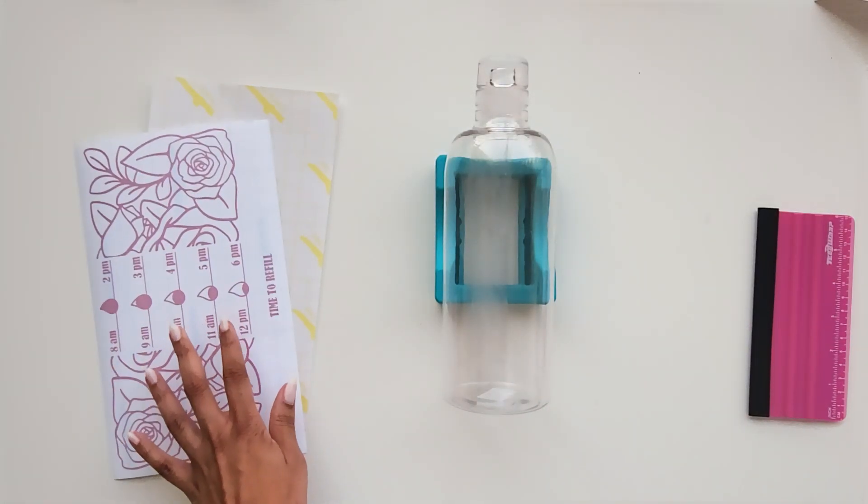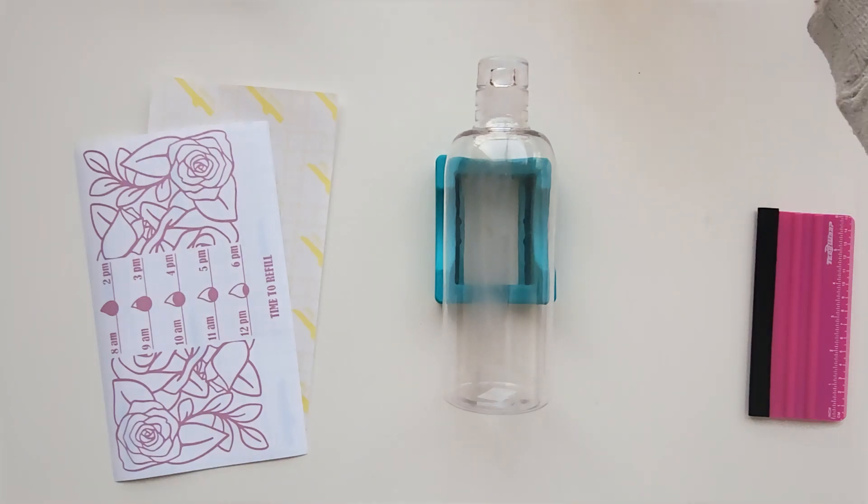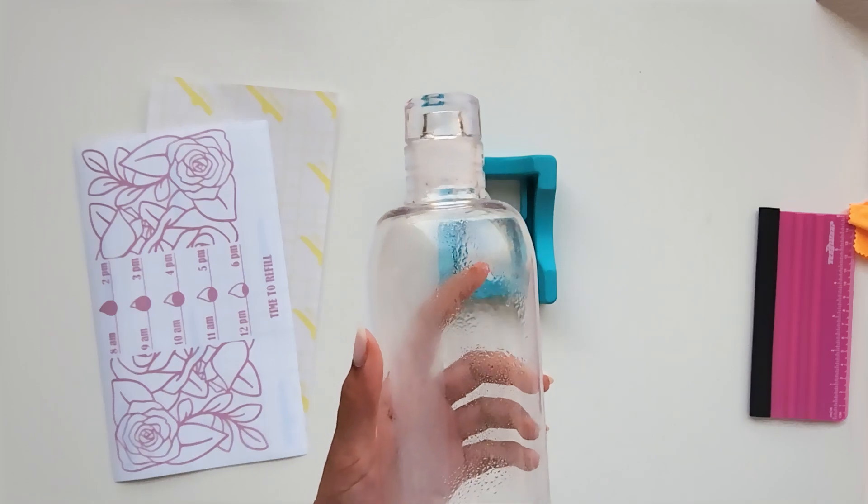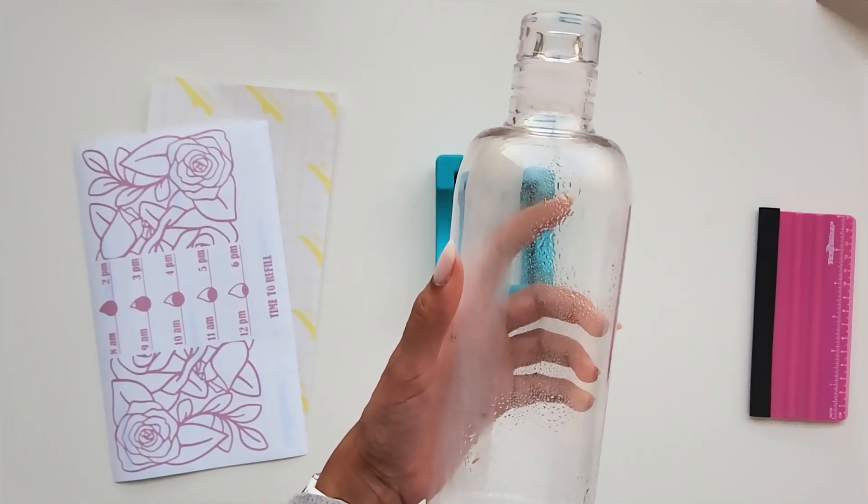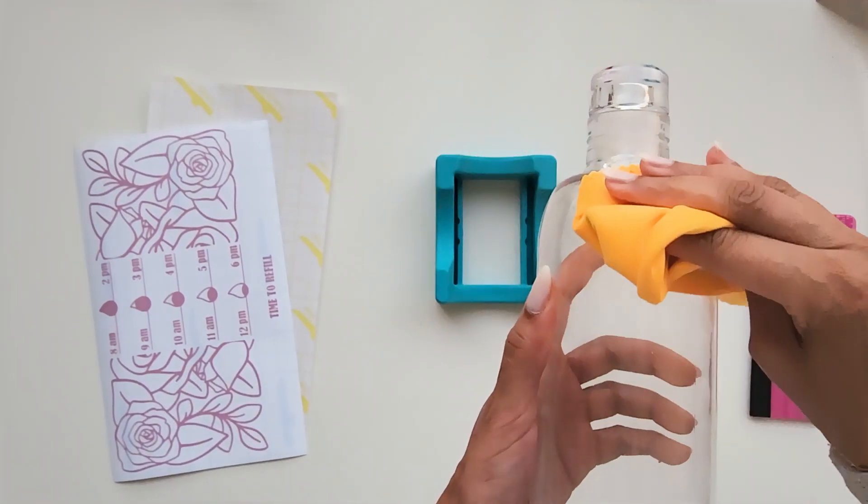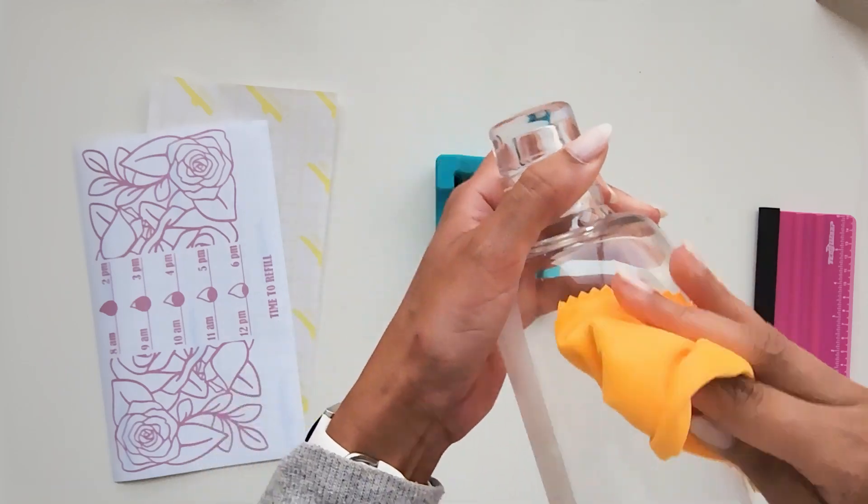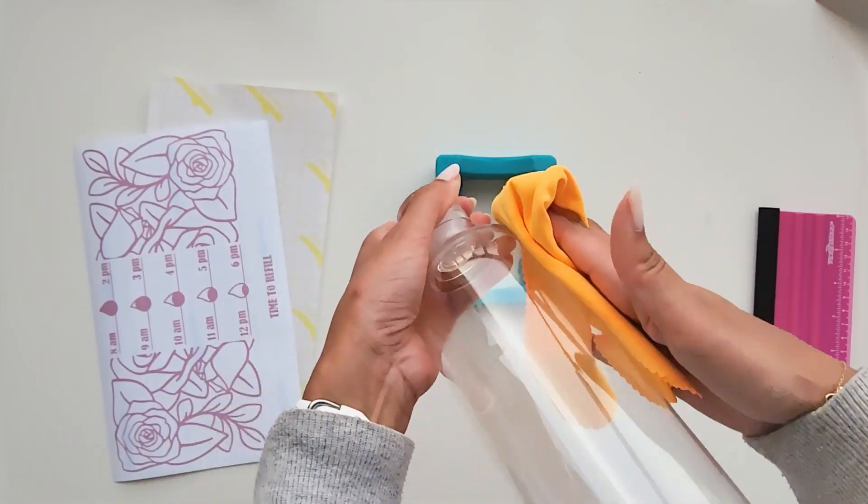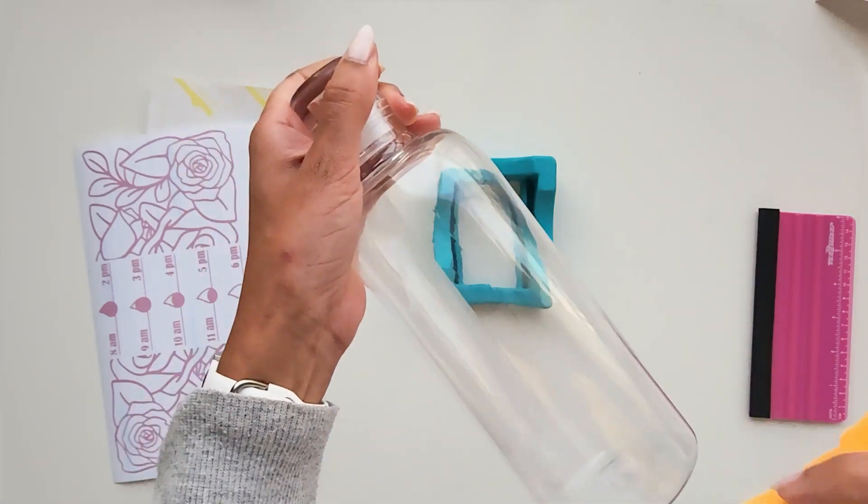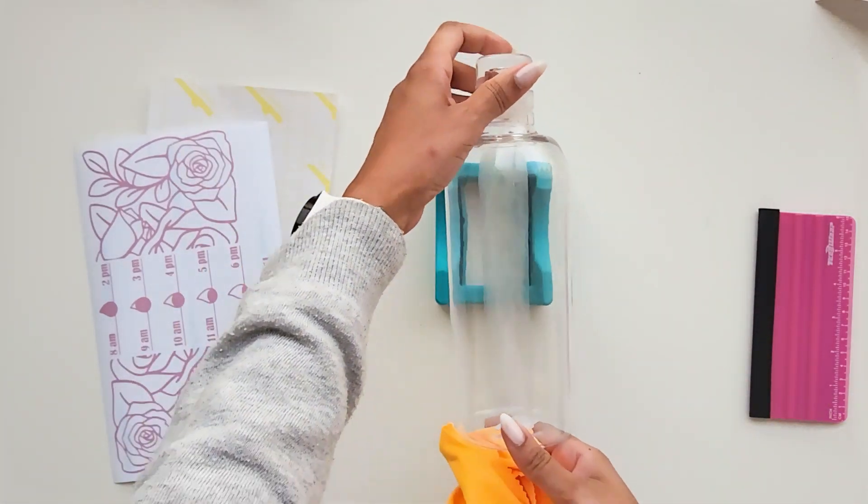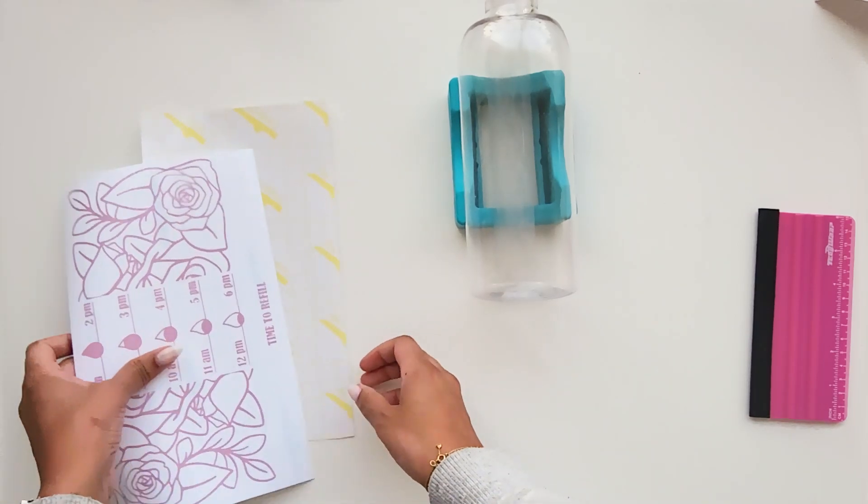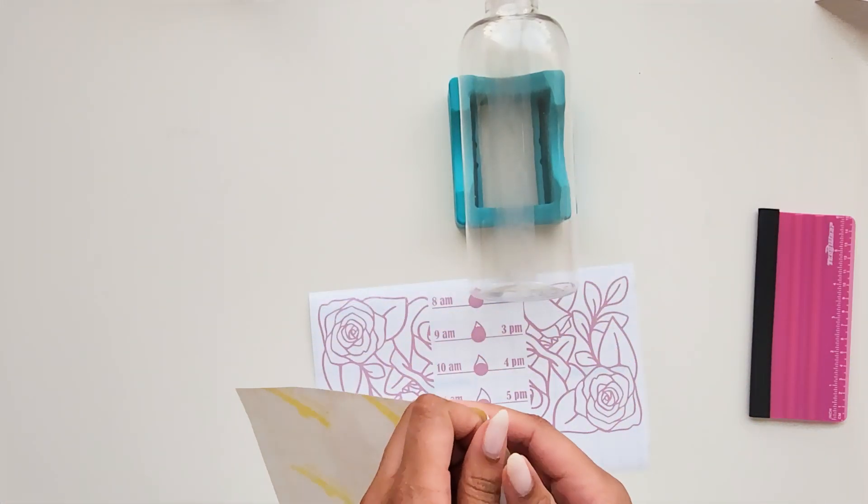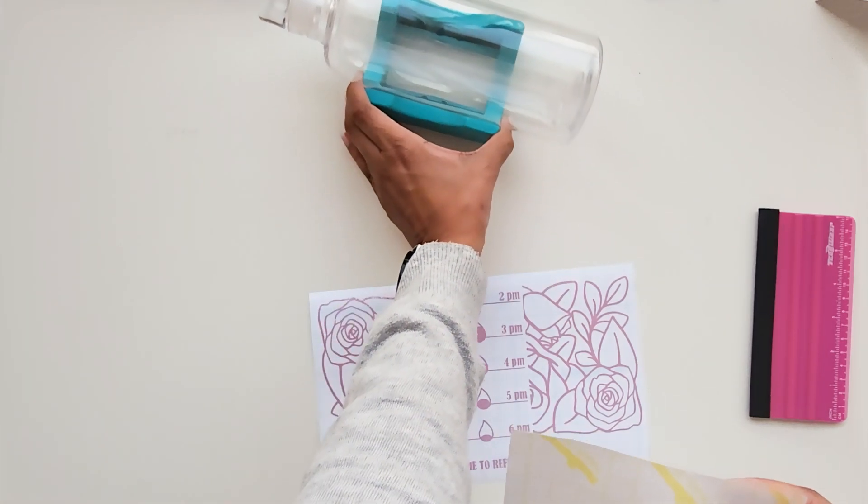Once we finished weeding our design, now let's just give our bottle a little bit of a wipe, just to remove any dust. And let us place our transfer tape.